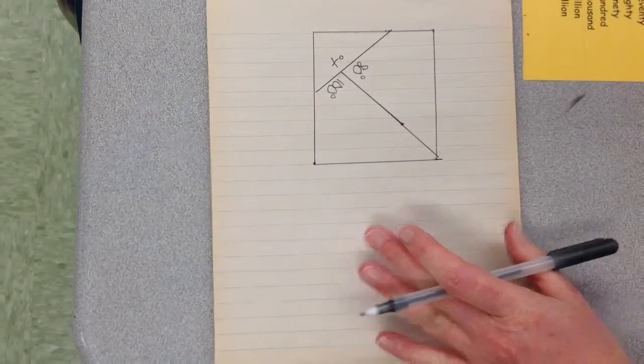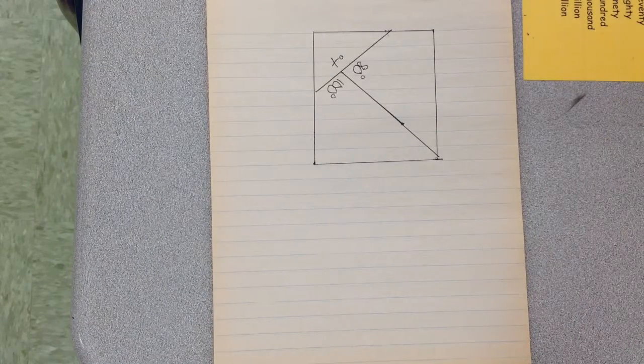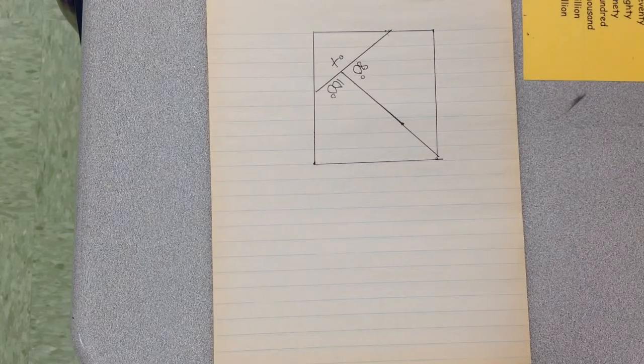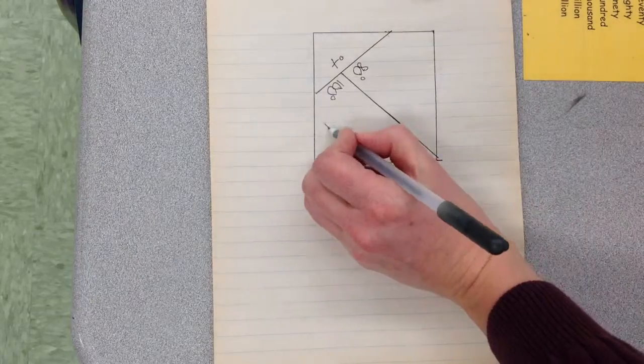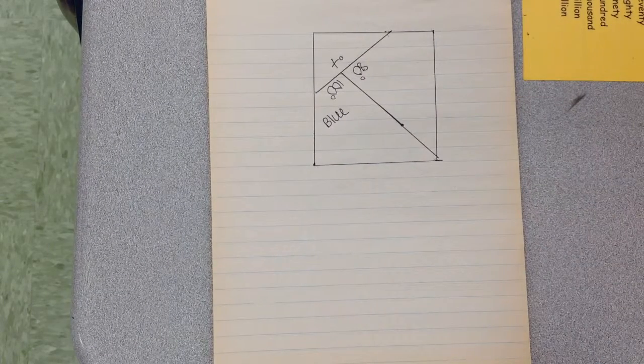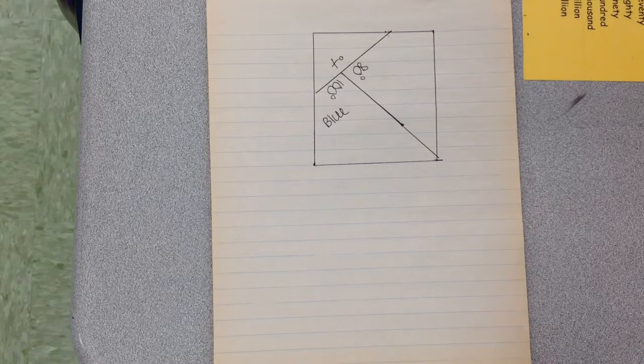We have a word problem that goes along with this. Cindy is making a quilt square. The blue, pink, and green pieces meet at a point. At the point the blue piece has an angle measurement of 100 degrees, so this is our blue, and the pink has an angle measurement of 80 degrees.